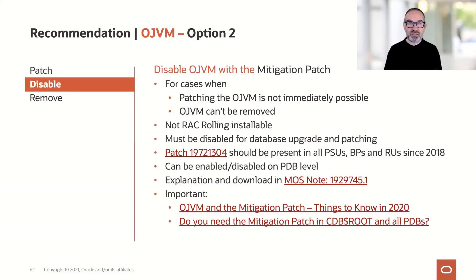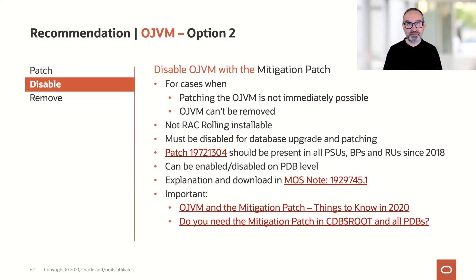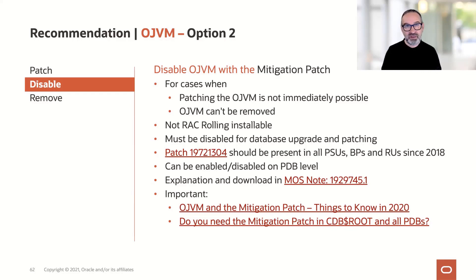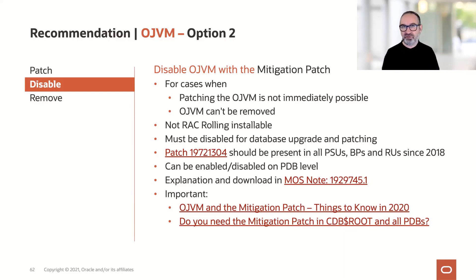You could disable OJVM. The first option is you patch it quarterly. The second option, you disable it. You could disable it with the mitigation patch. The mitigation patch is in all your environments — since 2018, or possibly even since 2017 — whenever you have a patch bundle applied.